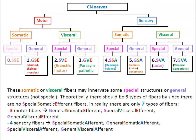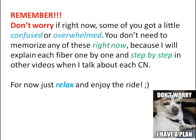These somatic or visceral fibers may innervate either special structures or general structures. Theoretically there should be eight types of fibers, but since there are no special somatic efferent fibers, in reality there are only seven types of fibers. Three motor fibers: general somatic efferent, special visceral efferent, general visceral efferent. And four sensory fibers: special somatic afferent, general somatic afferent, special visceral afferent, general visceral afferent.